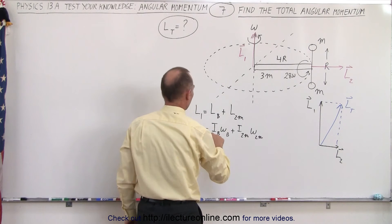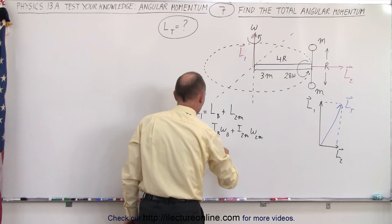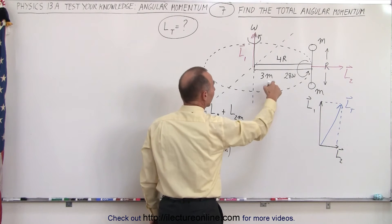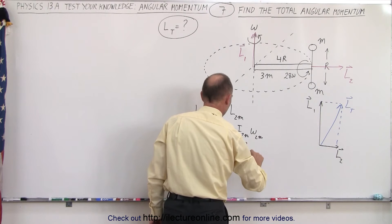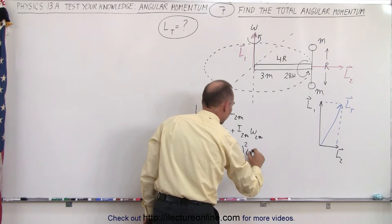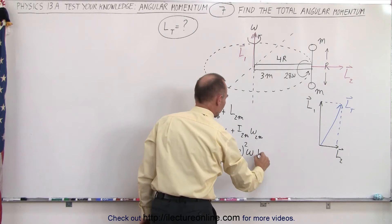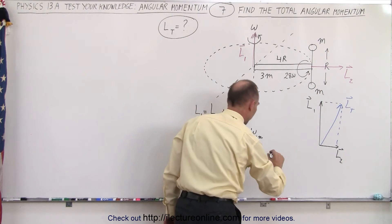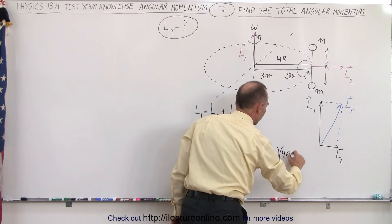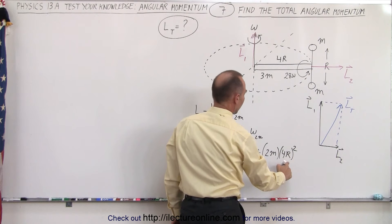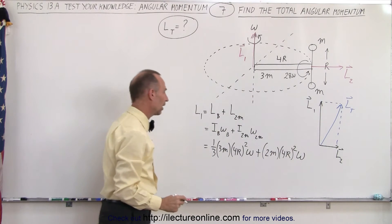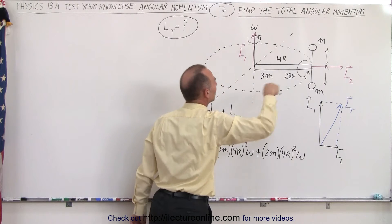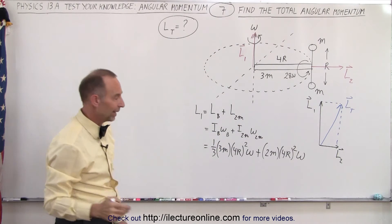So let's find out what this is equal to. The moment of inertia of a bar about its end is one-third times the mass. The mass is 3M and the length is 4R, so that's (1/3)(3M)(4R)² multiplied by omega, plus the moment of inertia of the two masses at distance 4R away, which is 2M times (4R)², multiplied by omega as well. So that is L1, the angular momentum of the bar and the two masses rotating at omega in the horizontal direction.